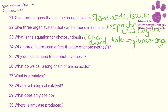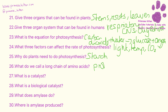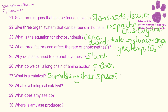Three factors that can affect the rate of photosynthesis: the amount of light, the temperature, or the concentration of carbon dioxide. Plants need photosynthesis so that they can make starch from the glucose. A long chain of amino acids is a protein. A catalyst is something that speeds up a rate of reaction, and a biological catalyst is an enzyme.